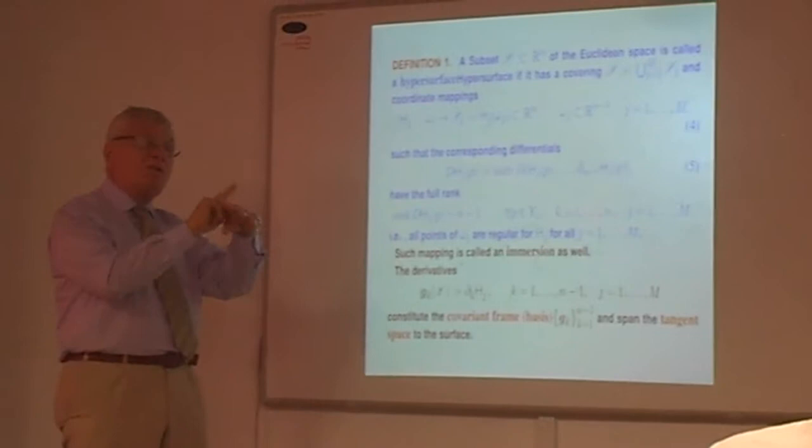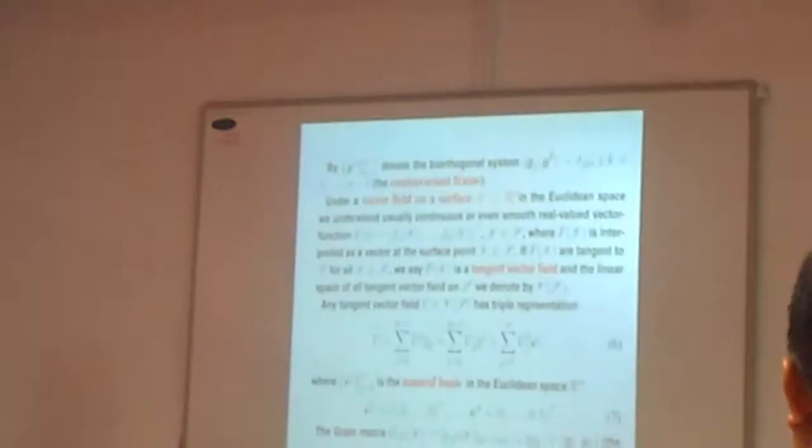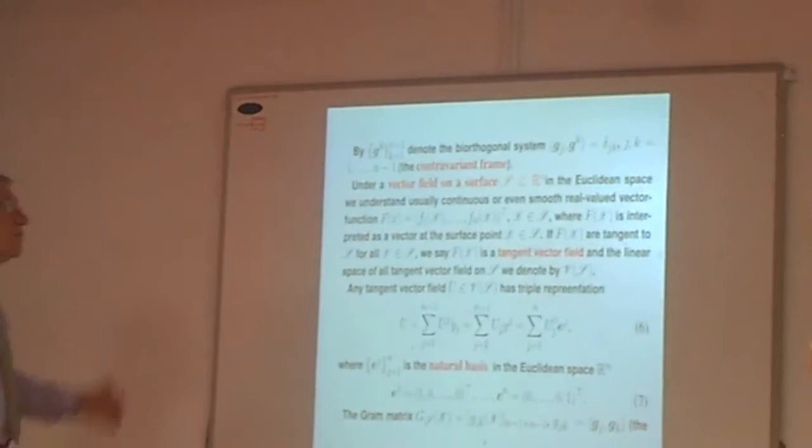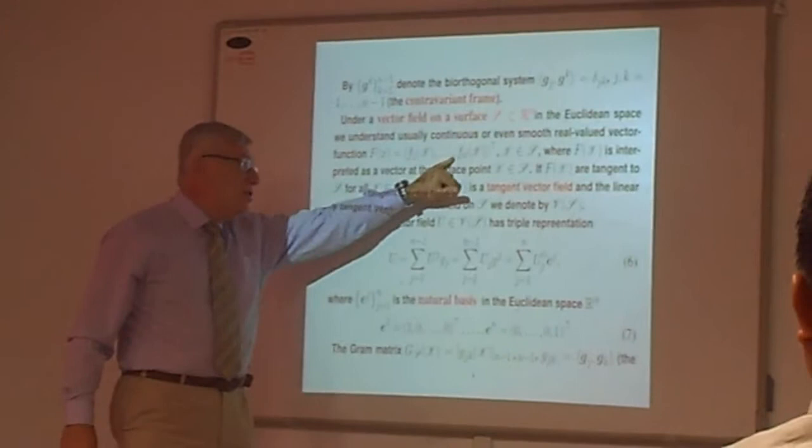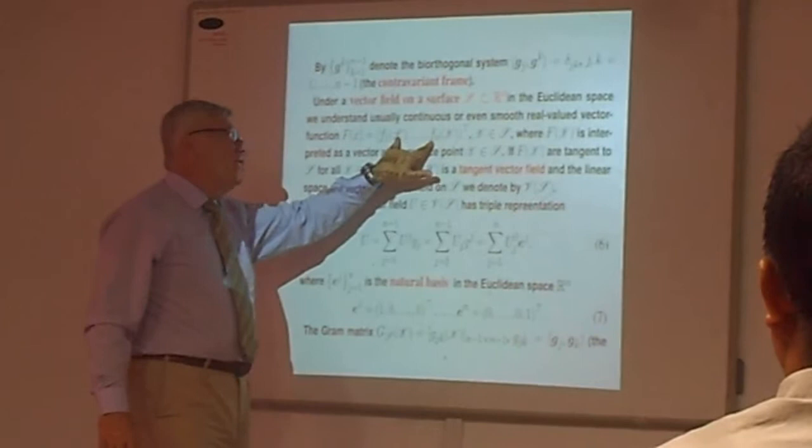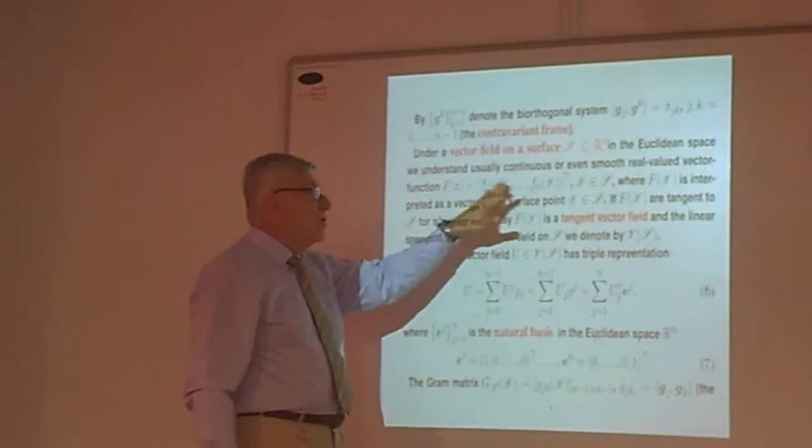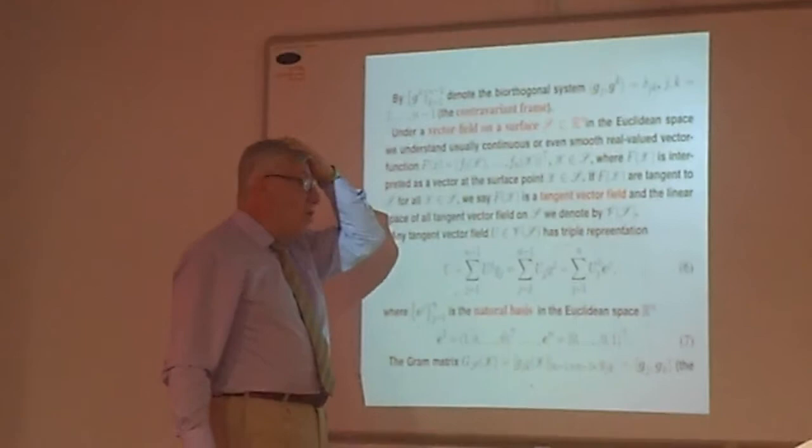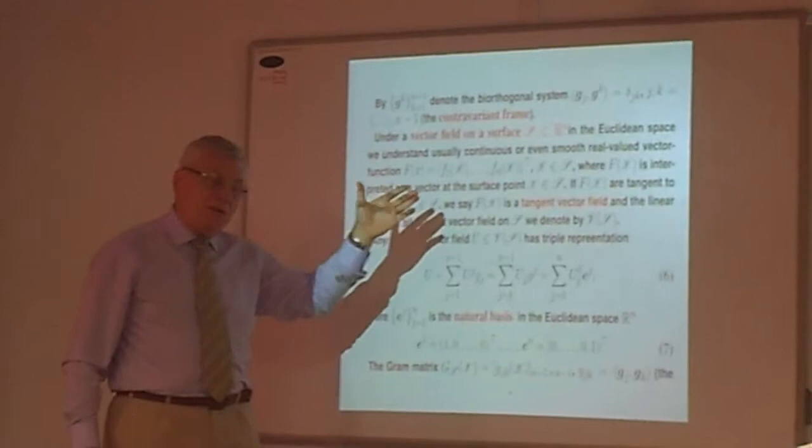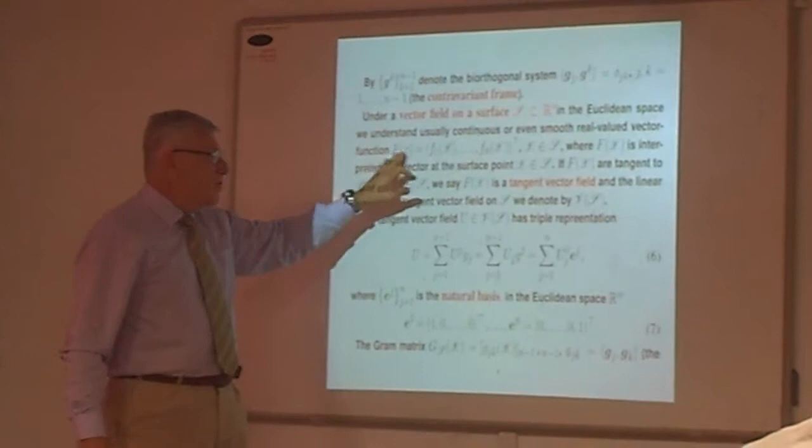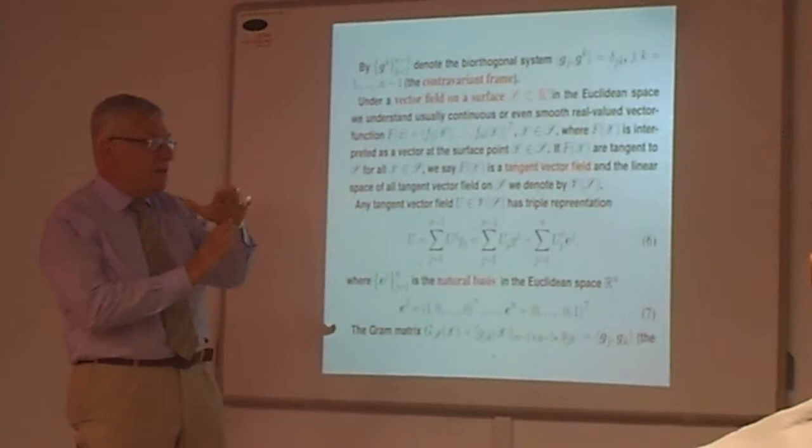But there exists another definition also of this surface. What is the vector field? I explained already. The vector field is the function which is defined at any point of the surface, and it is N vector function. For each value of X, it is vector which is fixed at the point X on the surface. Normally we consider the vector fields which are continuous, or at least, or maybe even smooth. We don't consider discontinuous vector fields. Vector field means the vector function which gives you at any point, it gives the vector of the surface. Yes, tangential vector field means that at...